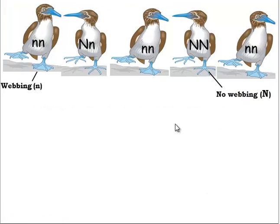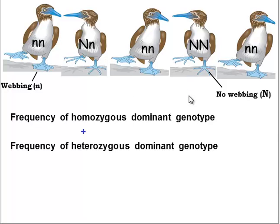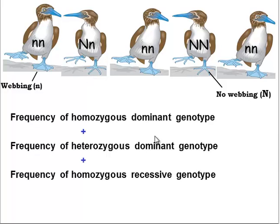Now, we can also infer something else. Here's our population of boobies. We could also infer that the frequency of the homozygous dominant genotype, plus the frequency of the heterozygous dominant genotype, plus the frequency of the homozygous recessive genotype, also are going to add up to 1.